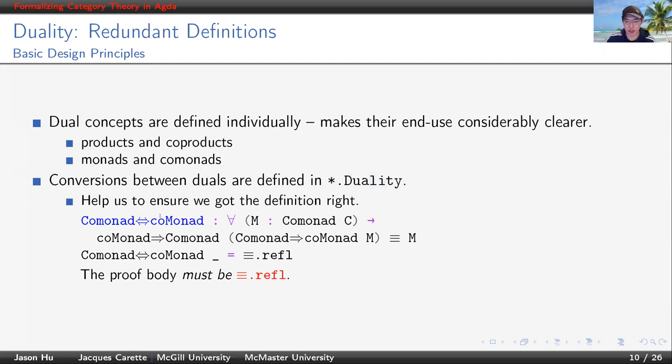As a first step to ensure definitional duality, we define conversions between dual concepts in modules ending with duality. For each conversion, we provide a proof of definitional duality. In this example, we show that converting a comonad given as M here to a monad in the opposite category and back is the same as the comonad that we begin with. This is ensured by making sure the body of this theorem is the reflexivity proof, so that both sides of this equality are convertible and therefore achieving definitional duality.